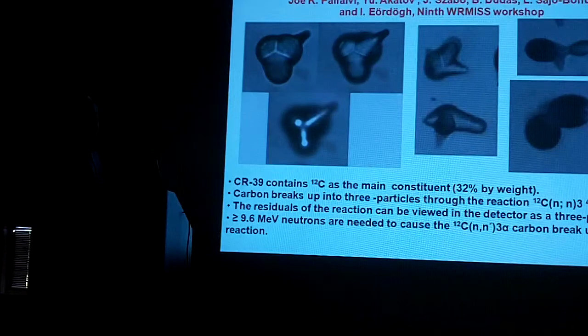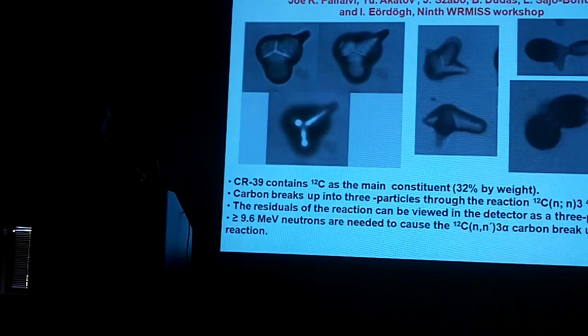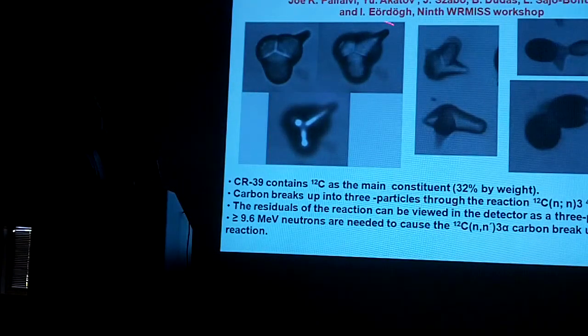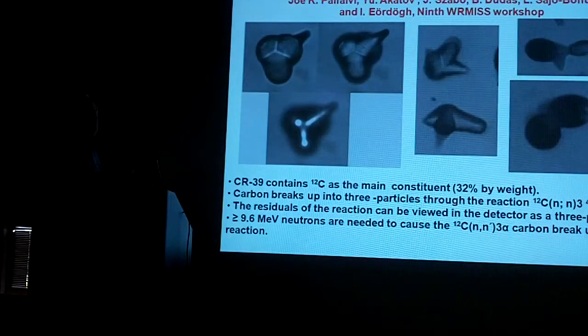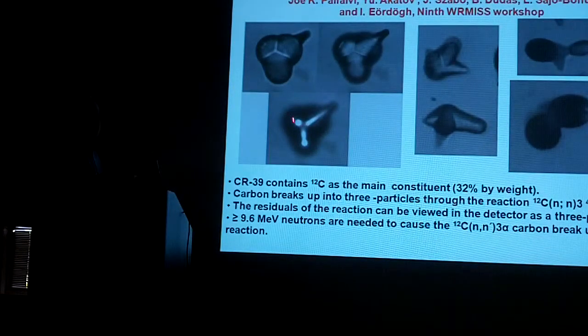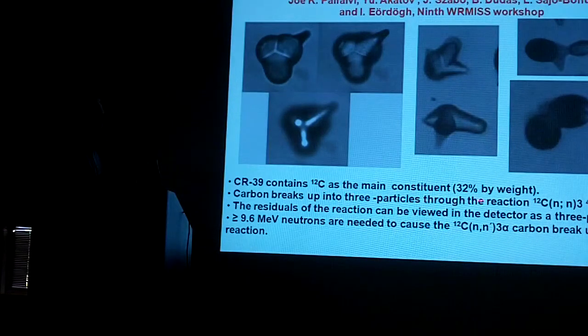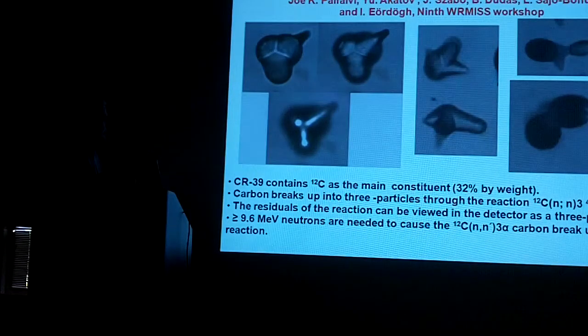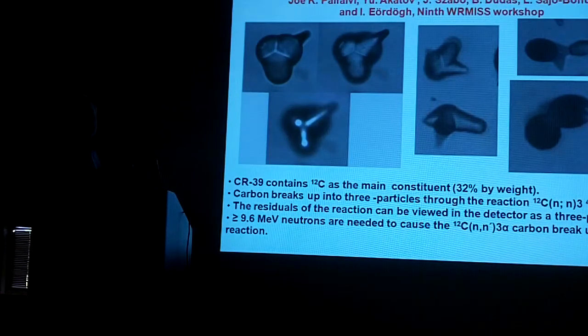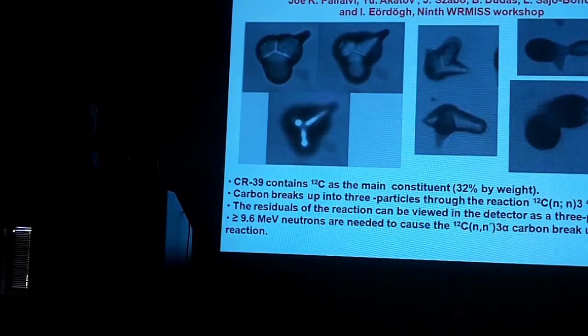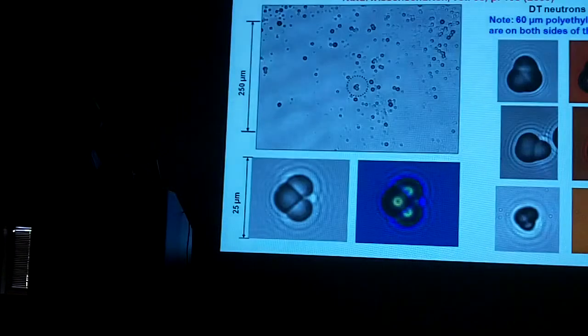I mentioned earlier that when we sometimes can see these little double or triple, it looks like kind of a three-leaf clover event. This came from the physics community, and this is the example of a carbon atom being shattered by a neutron, and you see the three ionized particles that go off. CR-39 contains 32 percent carbon-12. It takes a 9.6 MeV neutron impacting that carbon-12 to break it in half or to shatter. If we have less than 9.6 MeV, it's not going to leave one of these tracks there.